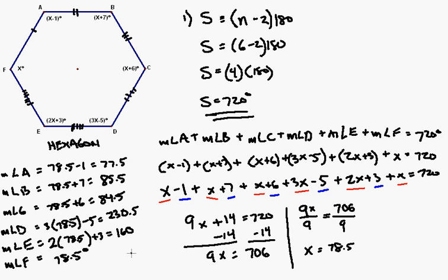Obviously, this is not a regular hexagon, because all the angle measurements are different. Now, to verify, if we add these all up, we should get close to 720. And the reason I say close is because this is an approximation. So, if I add up 77.5 plus 85.5 plus 84.5 plus 230.5 plus 160 plus 78.5, I get 716.5, so I'm a little off. Should get 720 if it was exact. But that's close. Done.